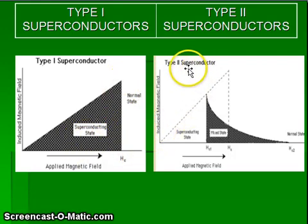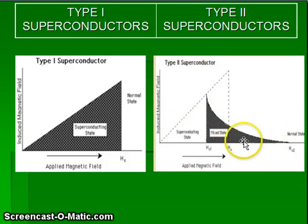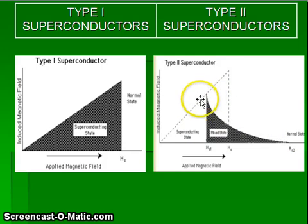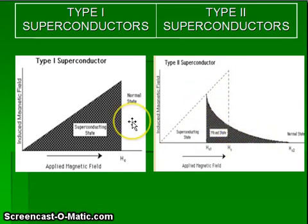Whereas in case of type 2 superconductors, the transition between the superconducting state and the normal state is not abrupt and sharp — it is gradual or slow.